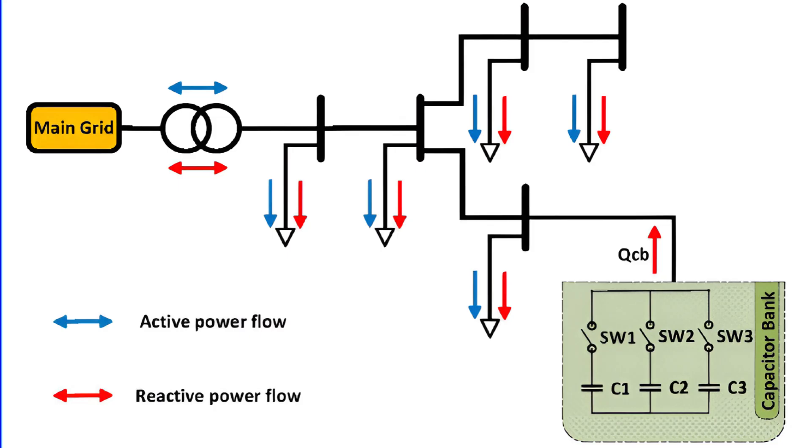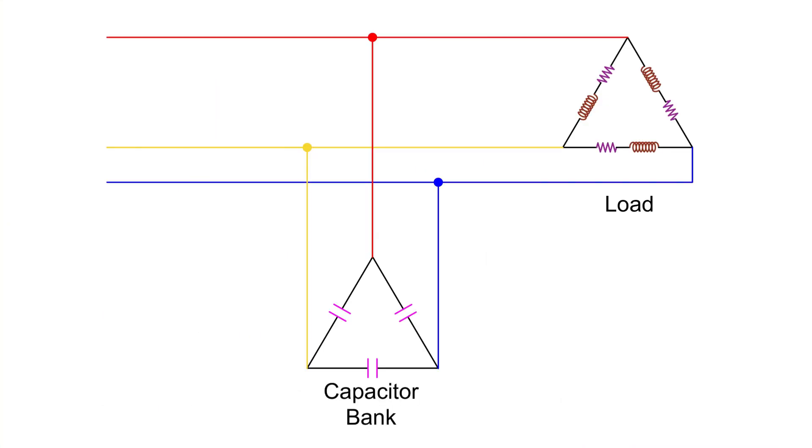In a delta connection, each capacitor is directly connected between two lines, so it gets full line voltage across it. You can think of it as a capacitor connected in parallel across two phases. That's why in delta, each capacitor experiences the full line-to-line voltage.